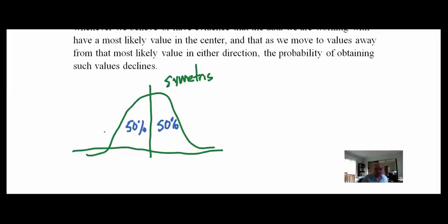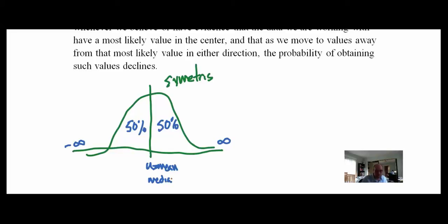Theoretically, the tails go to infinity on one side and negative infinity on the other. After about three standard deviations, the chance of something happening beyond that is really, really small — it can happen, but it's very small. In the middle we have mu, which is the mean. For a normal distribution, this is also the median and the mode — all three are the same.